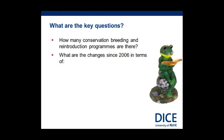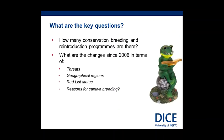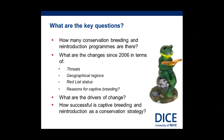We also asked: what are the changes since the ACAP in terms of threats to species in captive breeding and reintroduction programs, in terms of the geographical regions where these initiatives are happening, the red list status, and whether the reasons for captive breeding have evolved over time? And what is actually driving these changes, if there are changes going on?